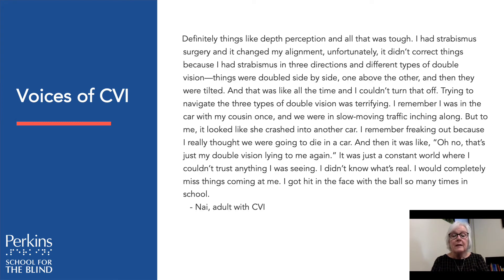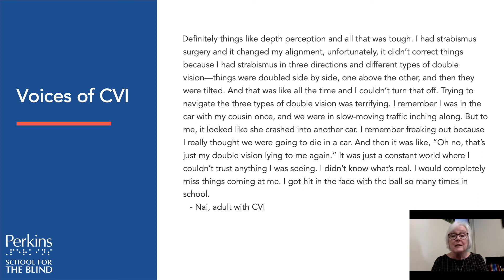An adult with CVI tells us: Definitely things like depth perception and all that was tough. I had strabismus surgery and it changed my eye alignment. Unfortunately, it didn't correct things because I had strabismus in three directions and three types of double vision. Things were double side by side, one above the other, and then they were tilted — it was like this all the time and I couldn't turn it off. Trying to navigate the three types of double vision was terrifying. I remember I was in a car with my cousin once, and we were in slow moving traffic inching along, but to me it looked like she was crashing into another car. I remember freaking out because I thought we were going to die. And it was like, that's just my double vision lying to me again. It was a constant world where I couldn't trust anything I was seeing. I didn't know where things were, and I completely missed things coming at me. I got hit by the ball so many times in school.